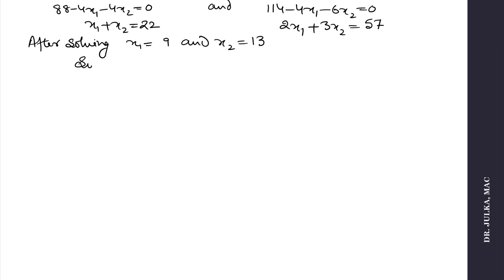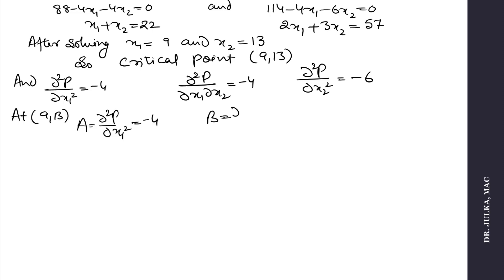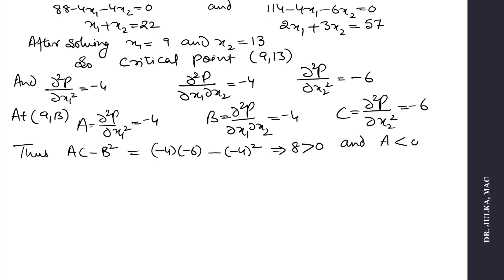So the critical point is (9, 13). The second derivative with respect to x1 is minus 4, the mixed second derivative with respect to x1 and x2 is minus 4, and the second derivative with respect to x2 is minus 6. At (9, 13) we calculate a, b, and c and get a equals minus 4, b equals minus 4, and c equals minus 6. Thus ac minus b² equals (minus 4)(minus 6) minus (minus 4)² which equals 8, which is positive, and a is negative.